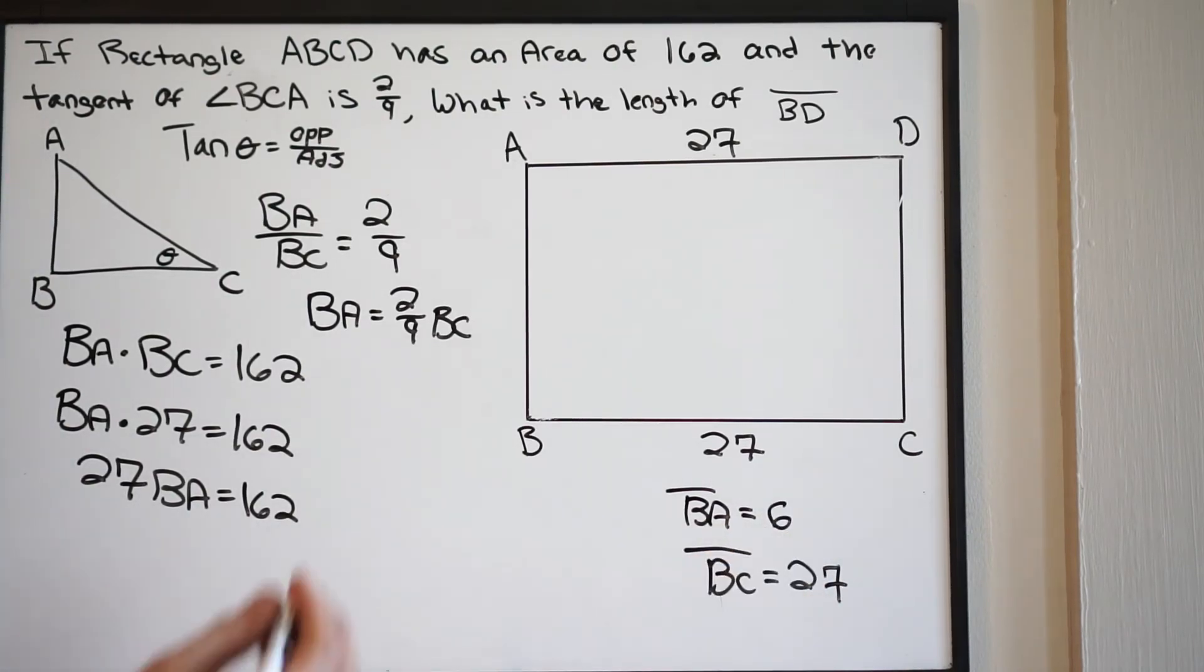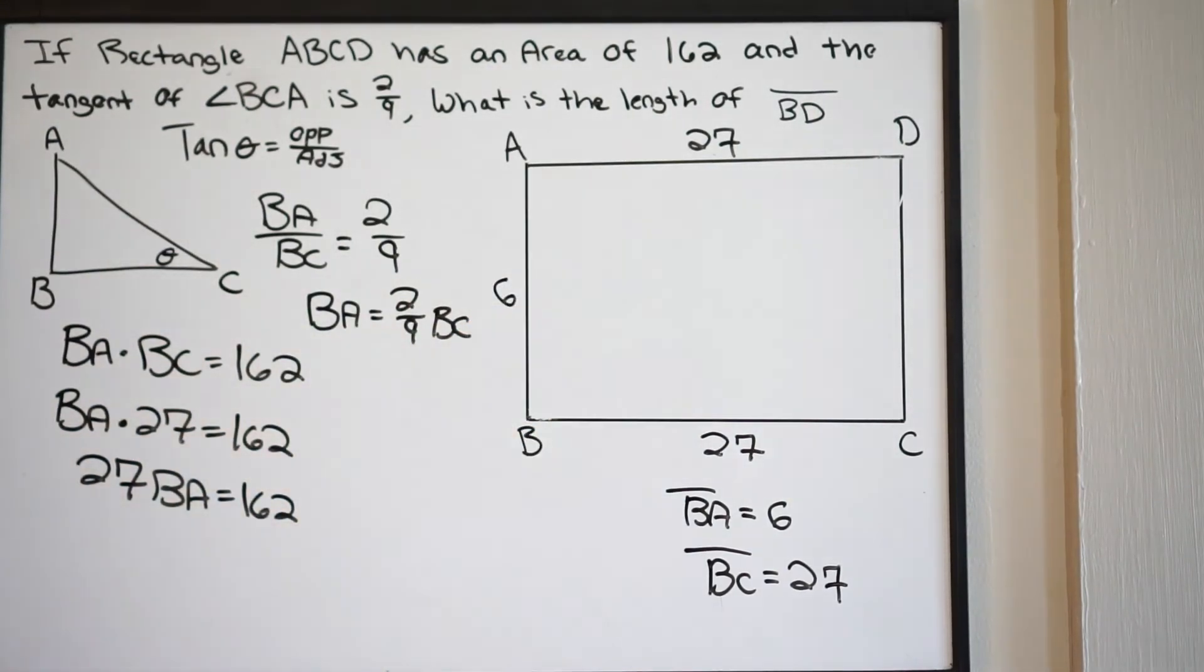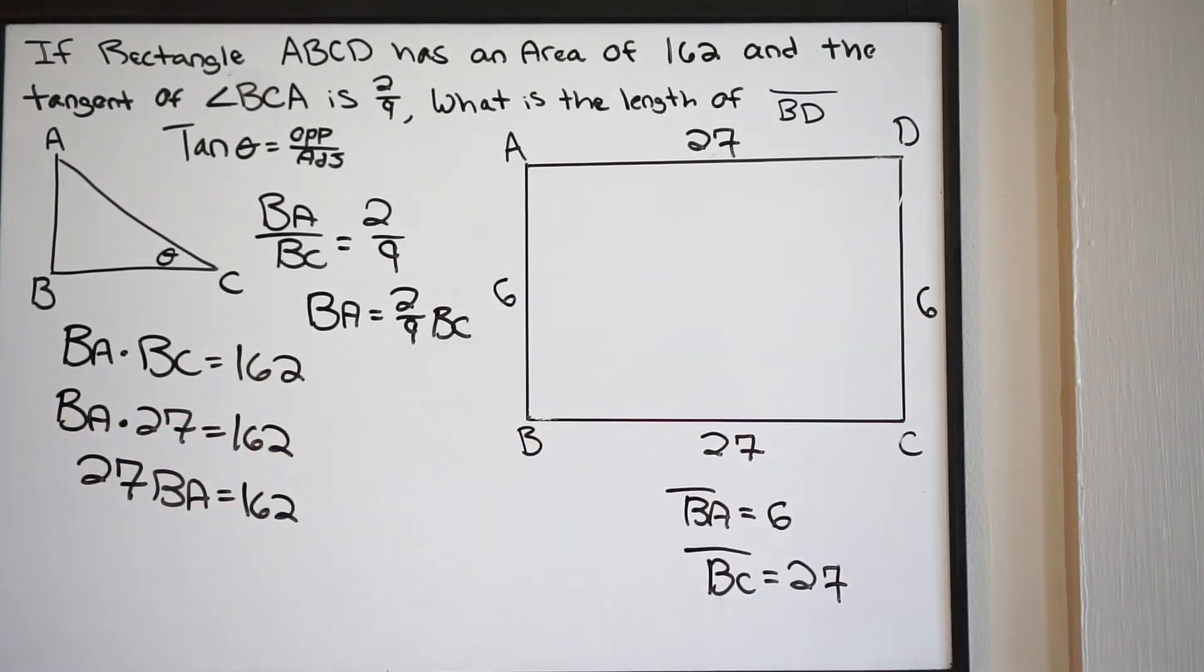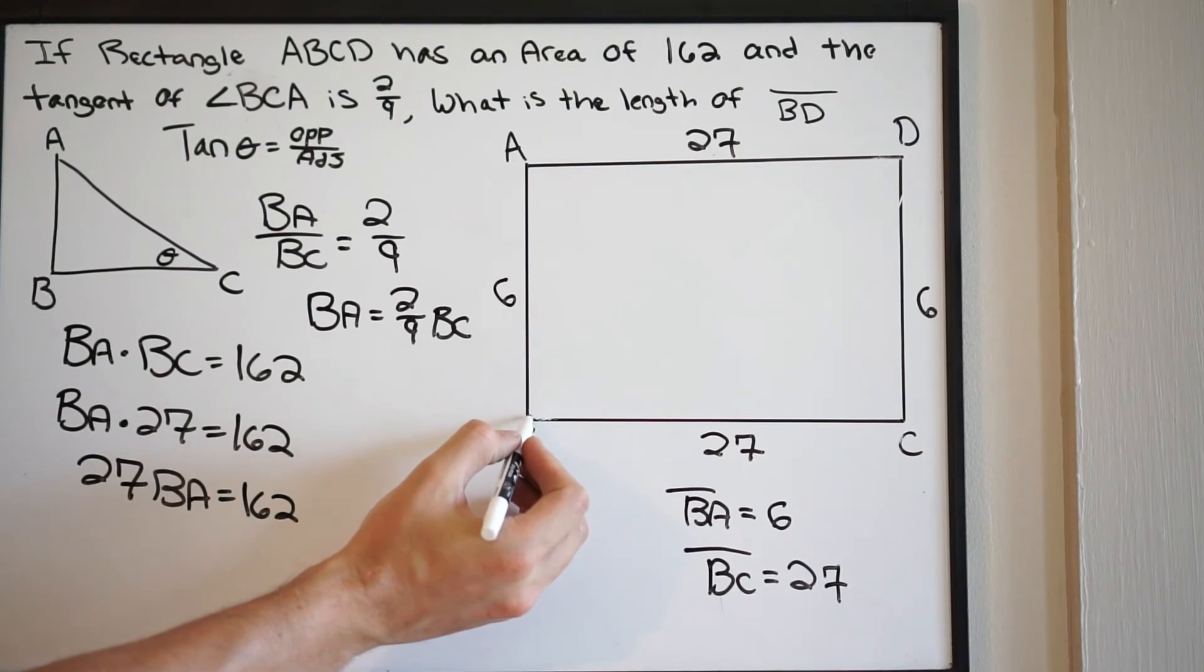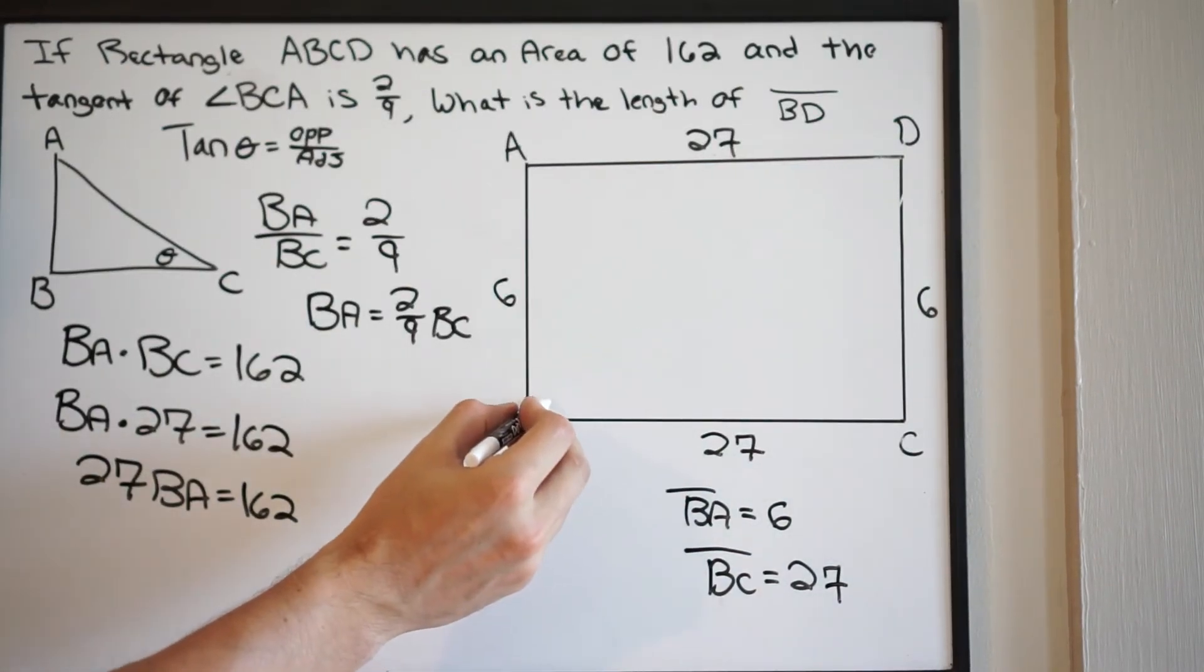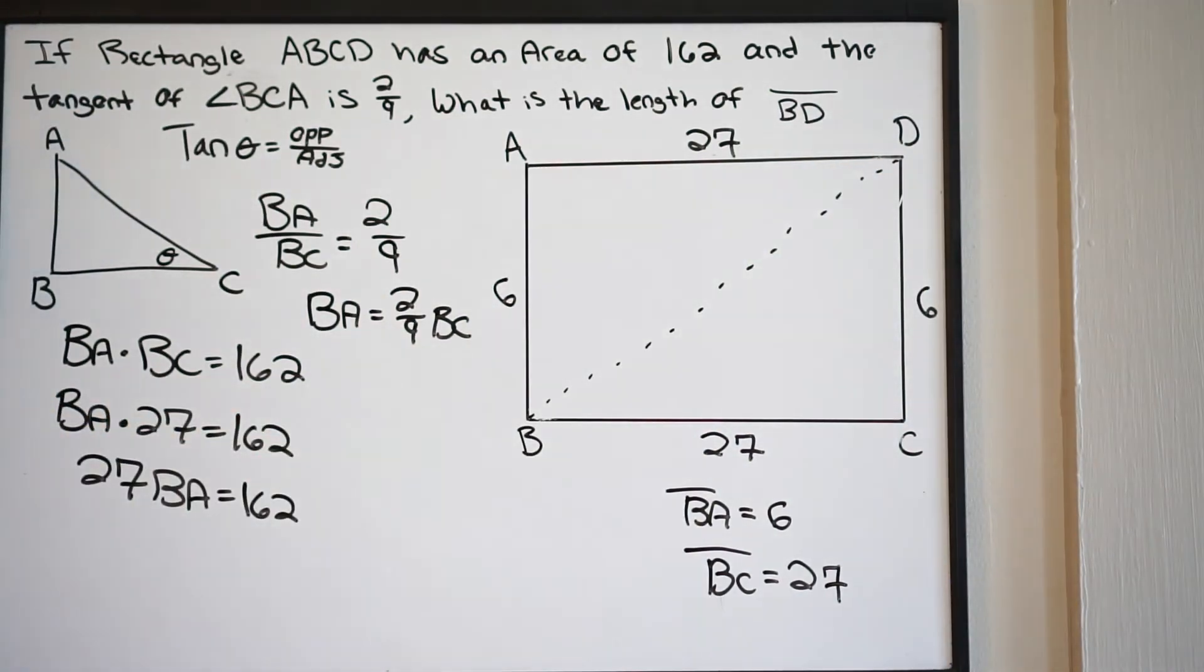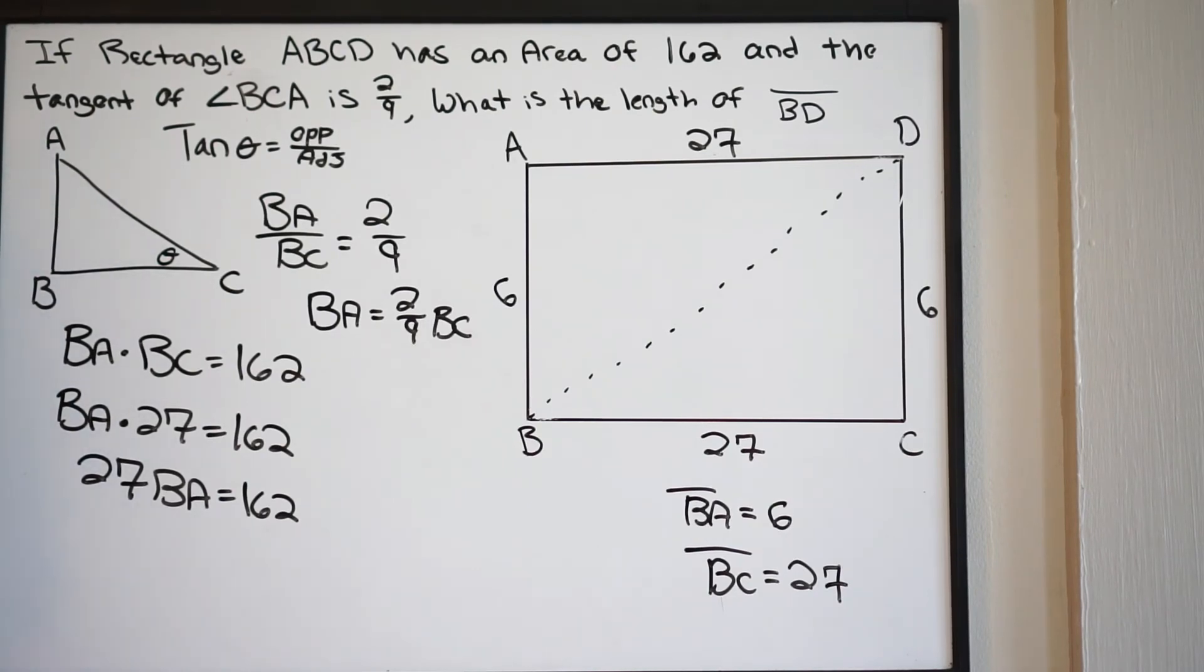We can go ahead and put this on our rectangle. So here's length BA, that will be 6. So if length BA is 6, length CD also has to be 6. We are almost done here. What is the question asking? It says, what is the length of BD? Essentially, what we're going to do here, let's just draw in a dashed diagonal so we can get a better view of what's going on. They want us to find this length here. We're going to use Pythagorean theorem. That's how we're going to solve for length BD.